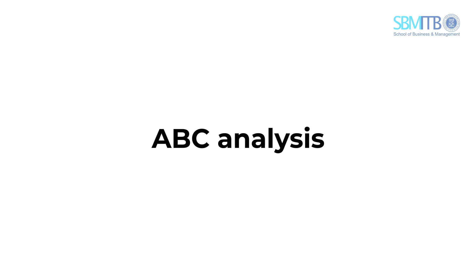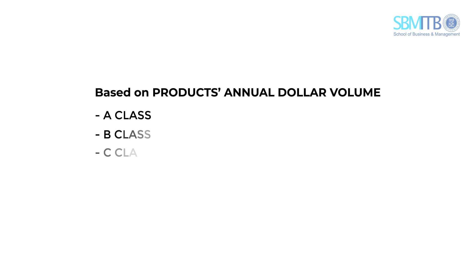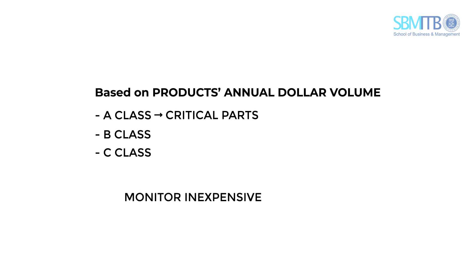ABC analysis is a method that divides on-hand inventory into three classifications based on product annual dollar volume. By using ABC analysis, we will have inventory policies that focus on critical parts, because it is not realistic to monitor inexpensive items with the same intensity as very expensive items.